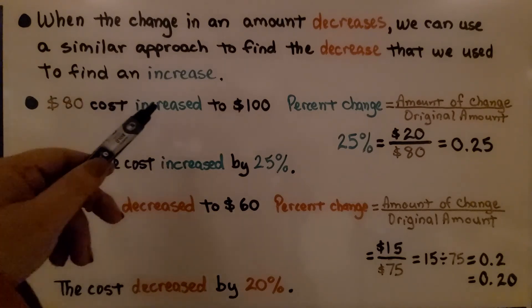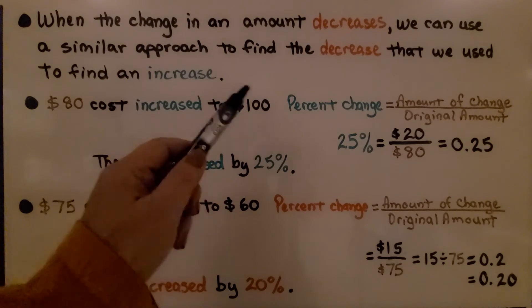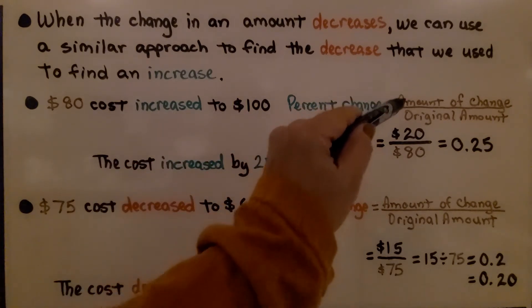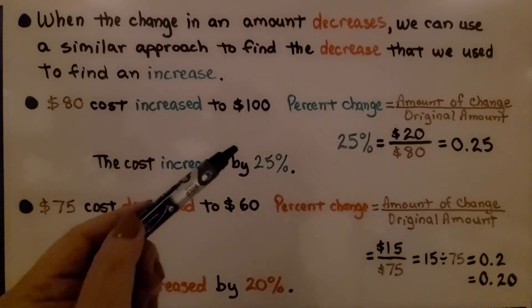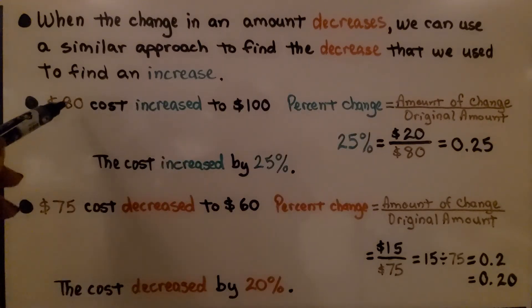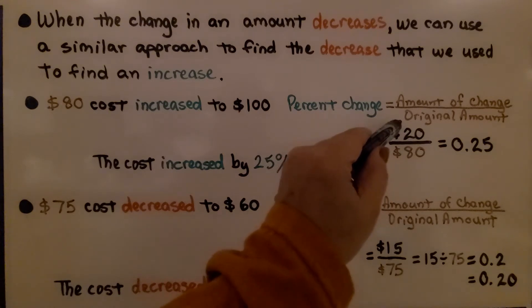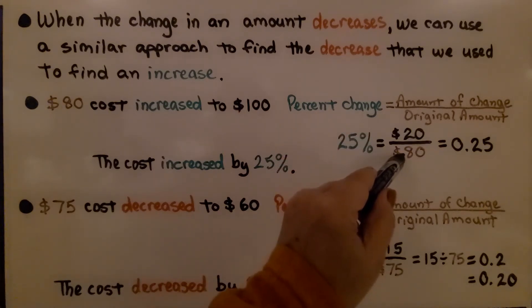An $80 cost increased to $100. We do the percent change is equal to the amount of change divided by the original amount. The difference between 80 and 100 is $20. That's the amount of change. The original amount is $80.